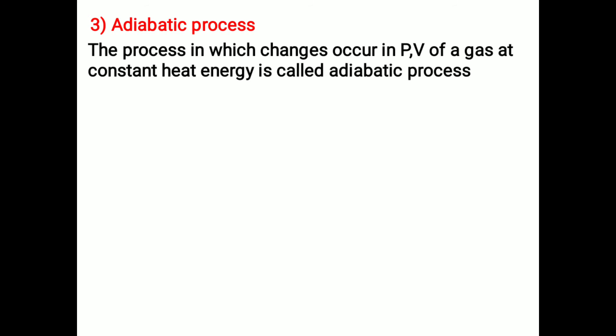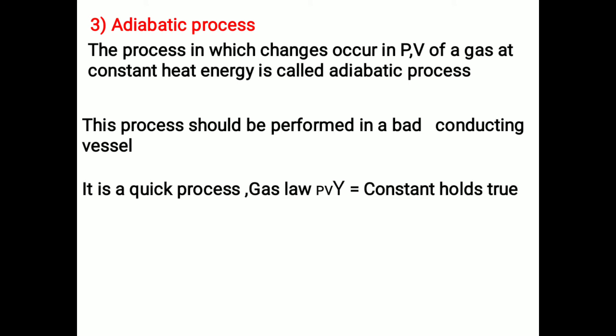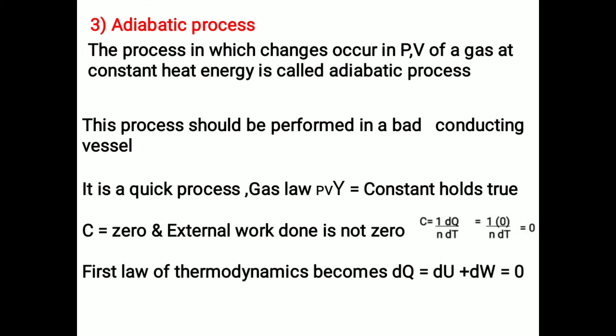Adiabatic process: the process in which changes occur in pressure and volume of a gas at constant heat energy is called an adiabatic process. This process should be performed in a bad conducting vessel. It is a quick process, and the gas law PV^γ equals constant holds. The specific heat capacity c equals zero, and external work done is not zero. The first law becomes dq equals du plus dw equals zero. Example: compressing an ideal gas quickly.